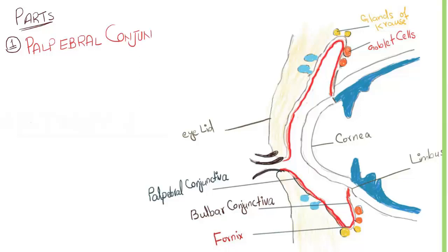It covers the under surface of both upper and lower eyelids. It is adherent to tarsus and cannot be easily dissected. It is very thin.